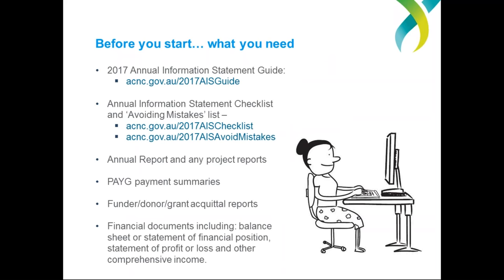The AIS form's introductory page will list the material you should have handy to help you complete your charity statement. Charities also have the ability to save their form as they go — we recommend doing so frequently. If you save and exit the form, you can pick up where you left off when you return. Charities can also preview their Annual Information Statement before they submit it, meaning they can check over responses before submission or consult with other responsible persons to make sure what is being submitted is as accurate as possible.